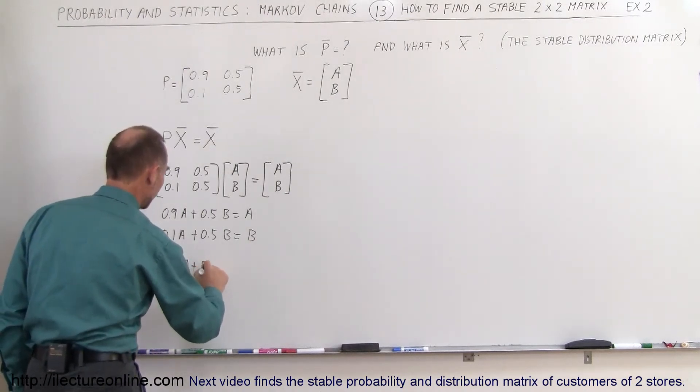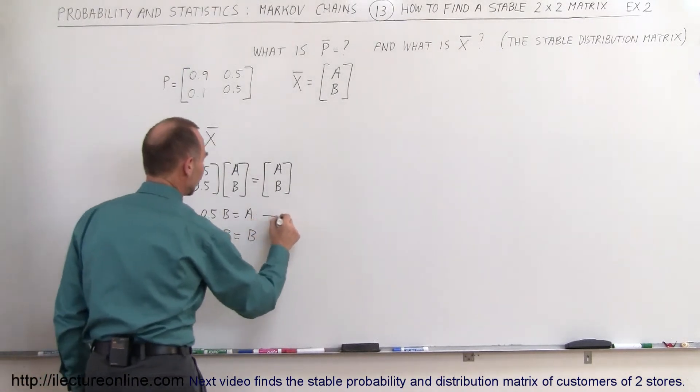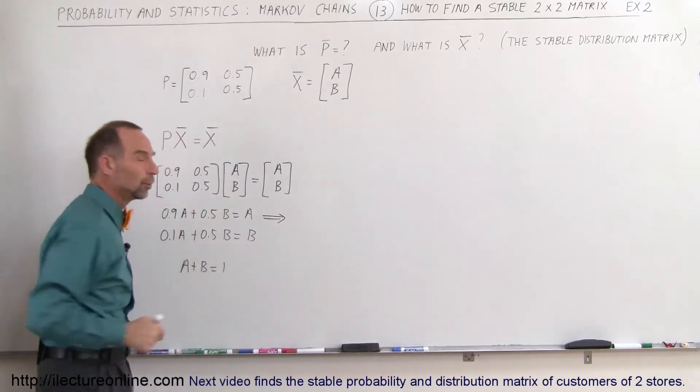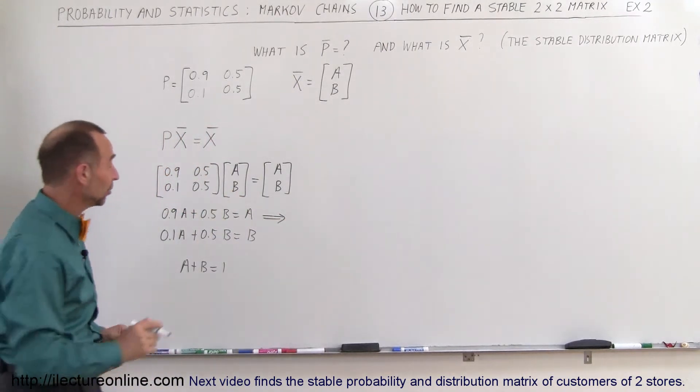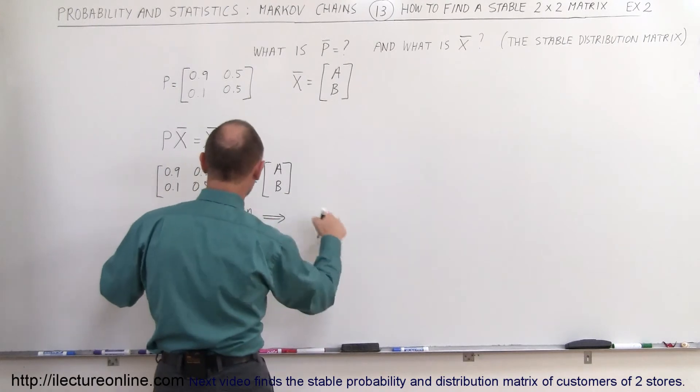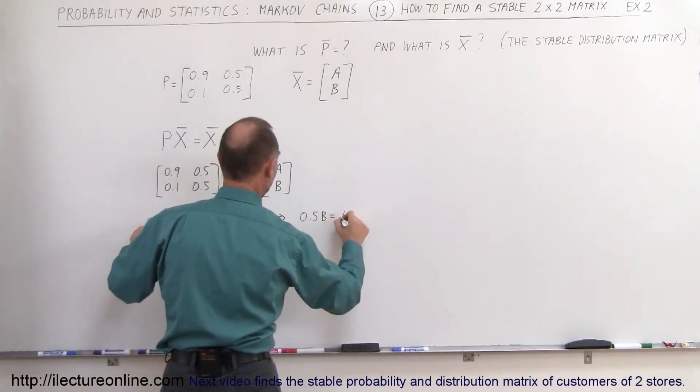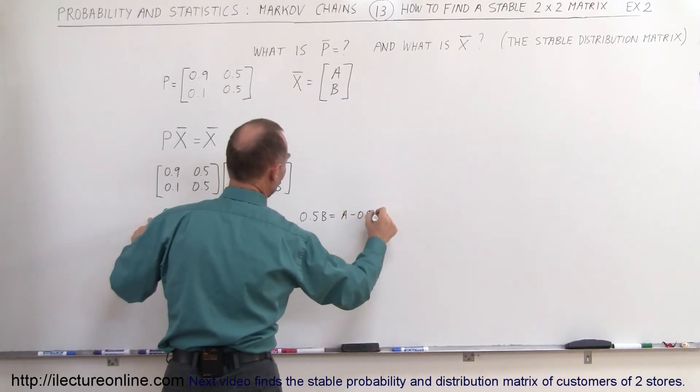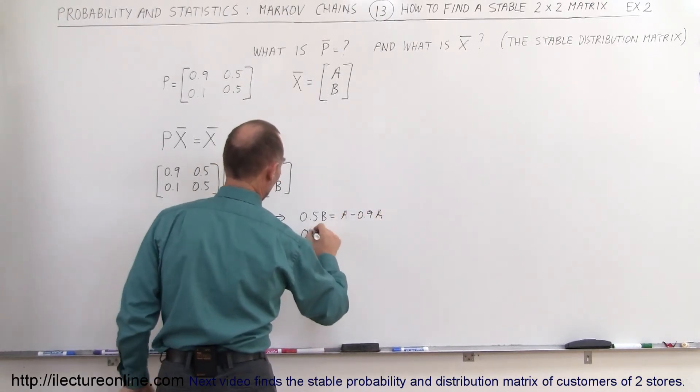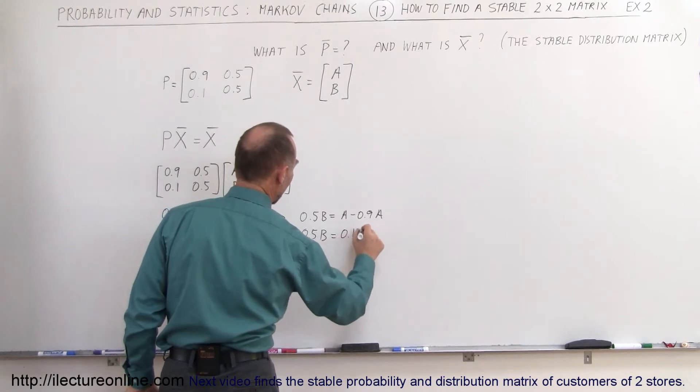We take this first equation. It doesn't really matter which of the two equations we take; we should get exactly the same results. When we move the 0.9A to the other side, we get 0.5B equals A minus 0.9A, or 0.5B equals 0.1A.